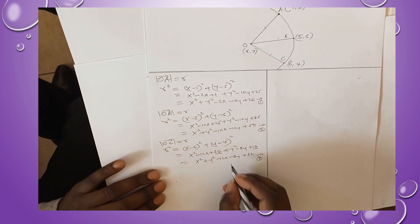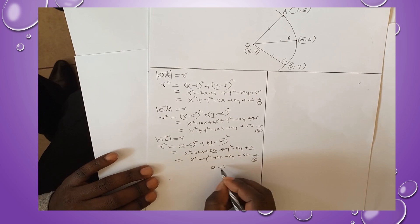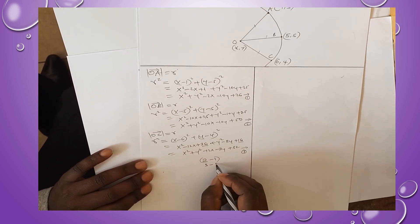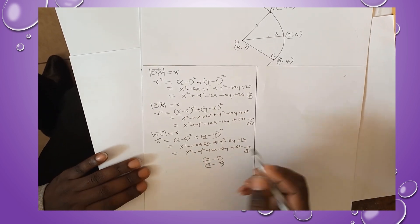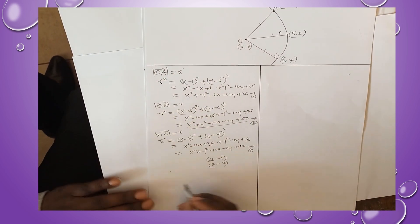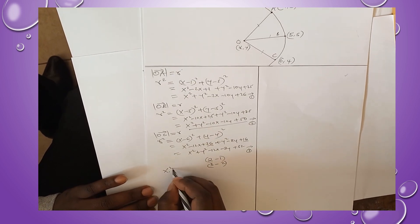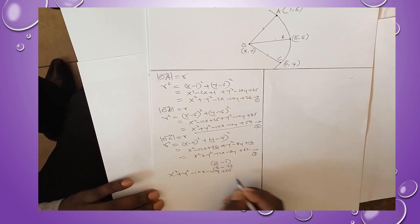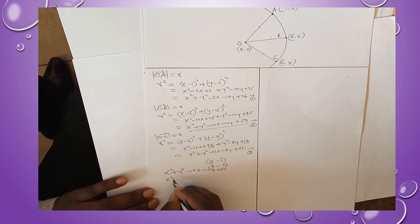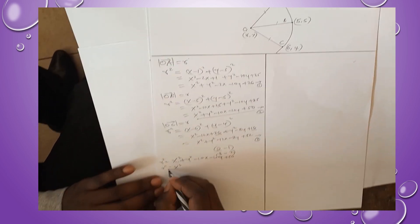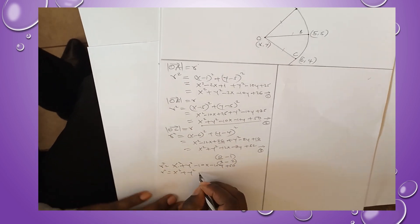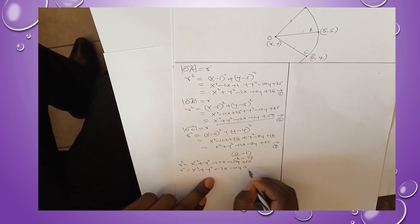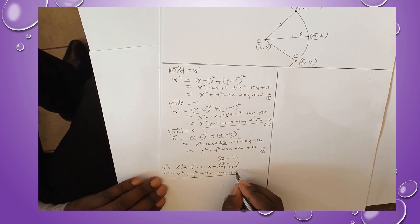What we will do is take equation 2 and subtract equation 1 from there, then we will take equation 3 minus equation 2. Equation 2 is x² + y² - 10x - 10y + 50. First equation is x² + y² - 2x - 10y + 26.